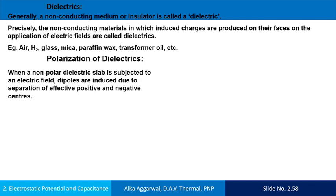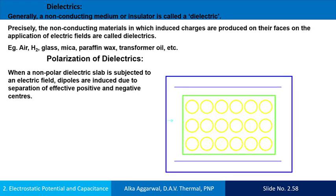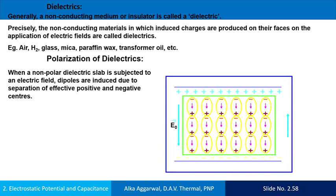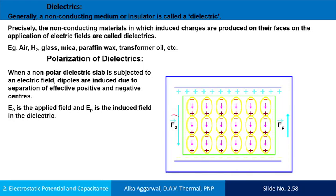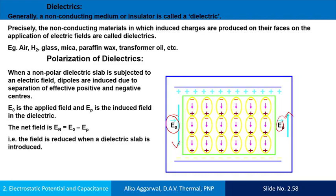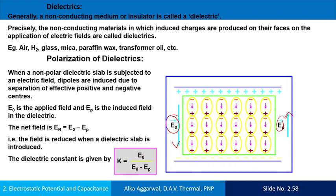Polarization of dielectrics. When a nonpolar dielectric slab is subjected to an electric field, dipoles are induced due to separation of effective positive and negative centers. E-not is the applied electric field and Ep is the induced electric field in the dielectric. The net field En is equal to E-not minus Ep. En is the electric field inside the dielectric slab. The dielectric constant is given by E-not upon E-not minus Ep.